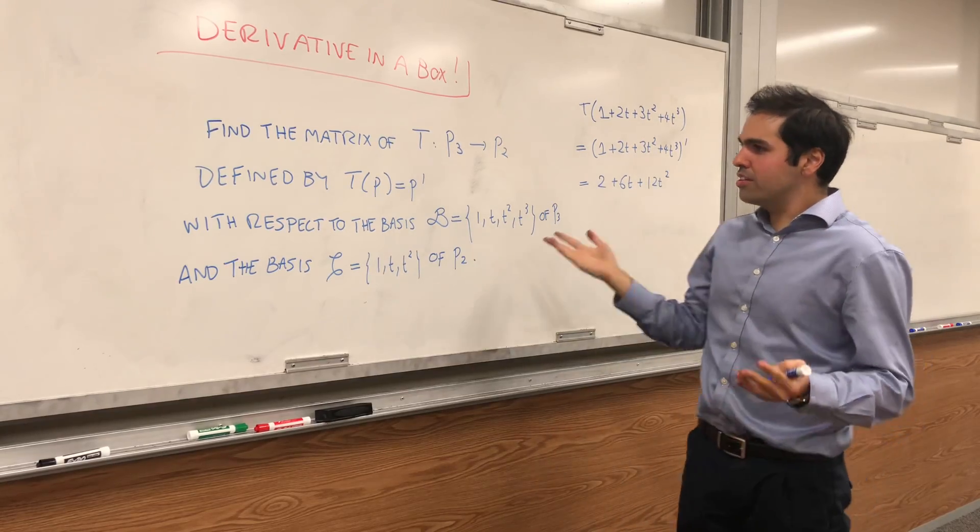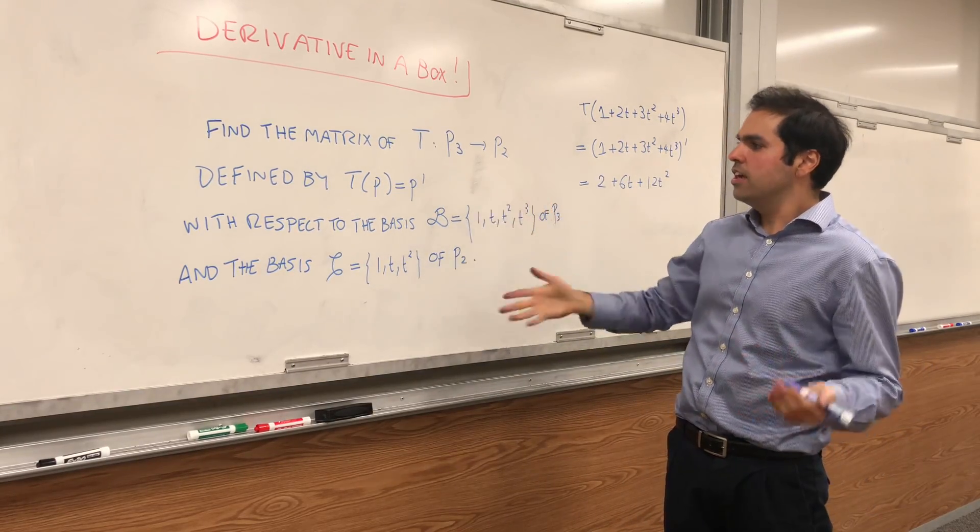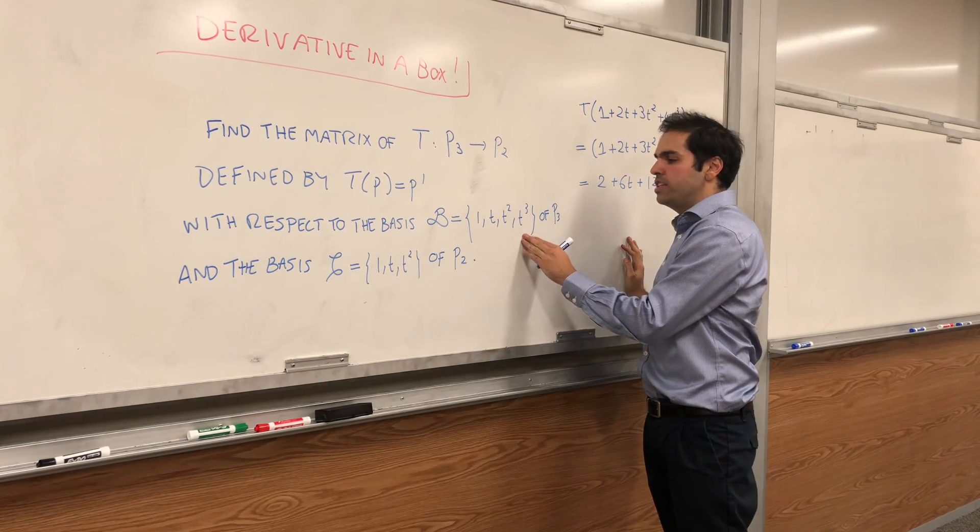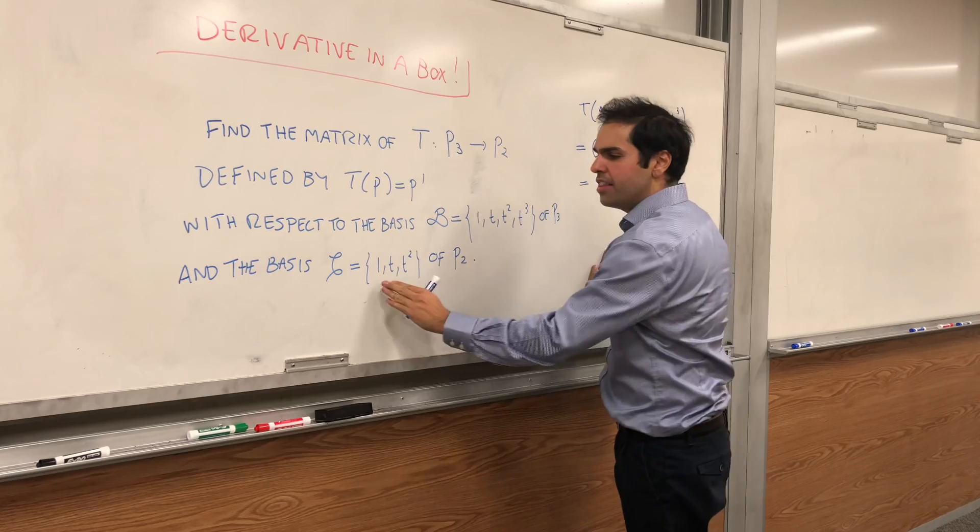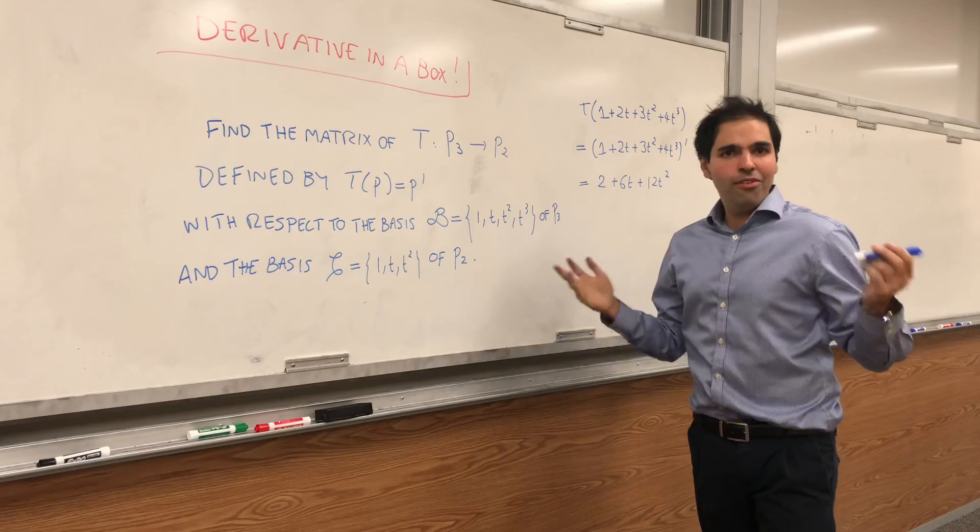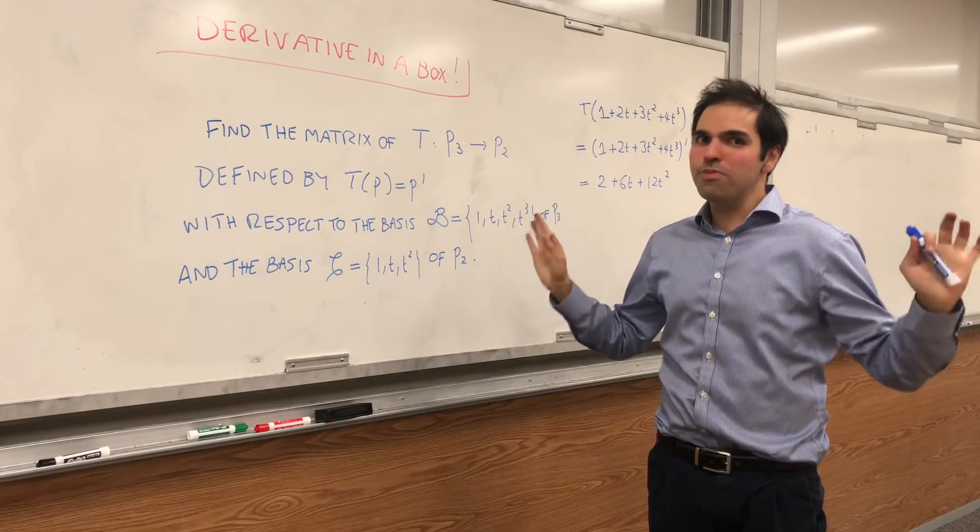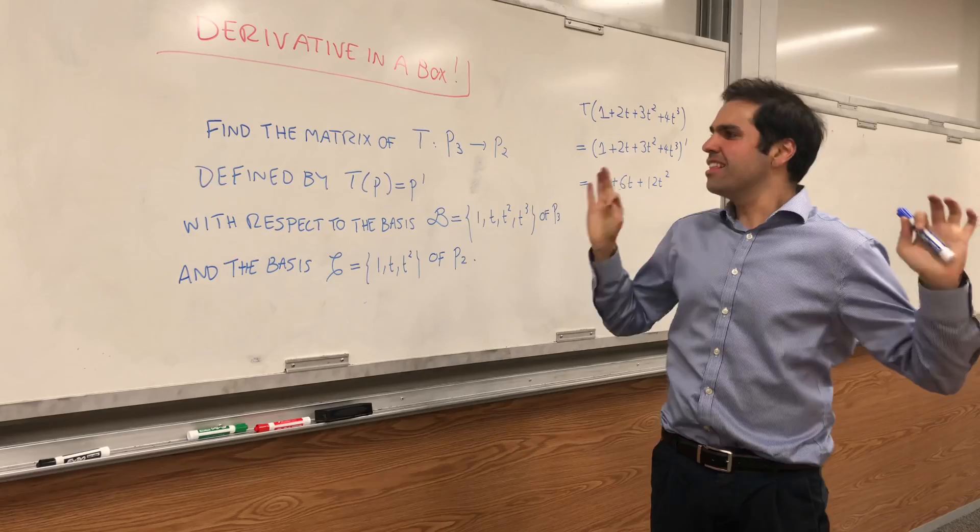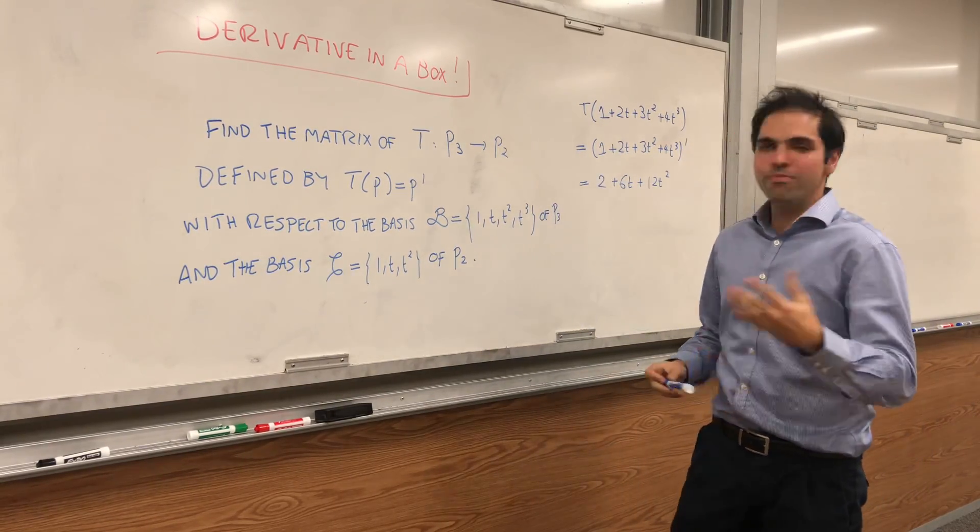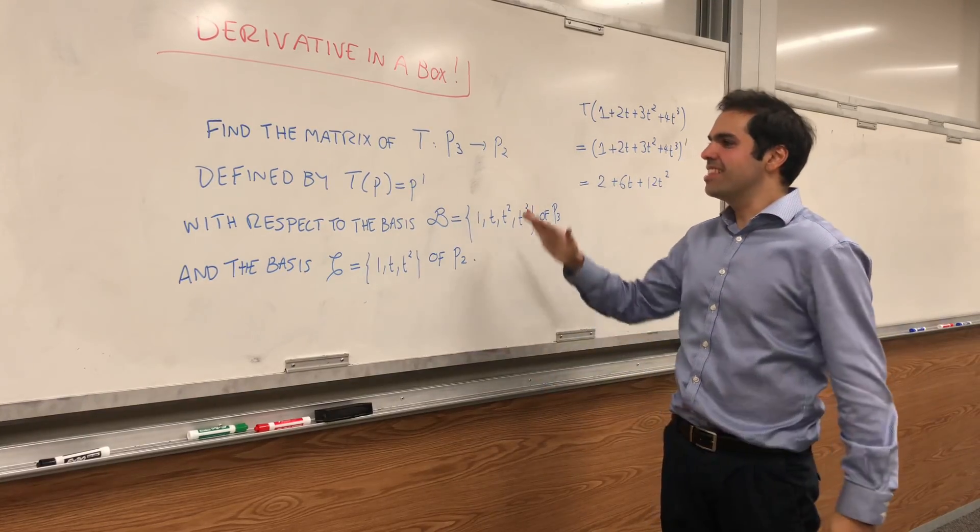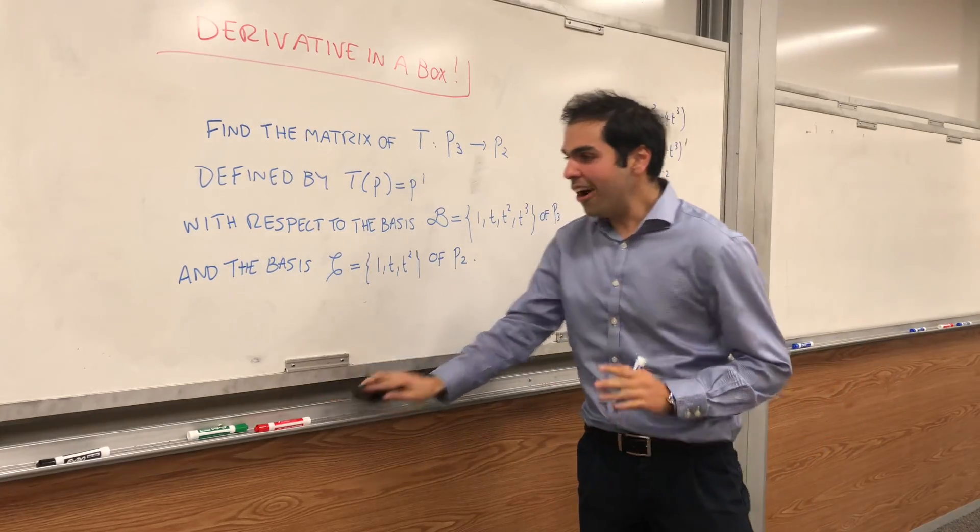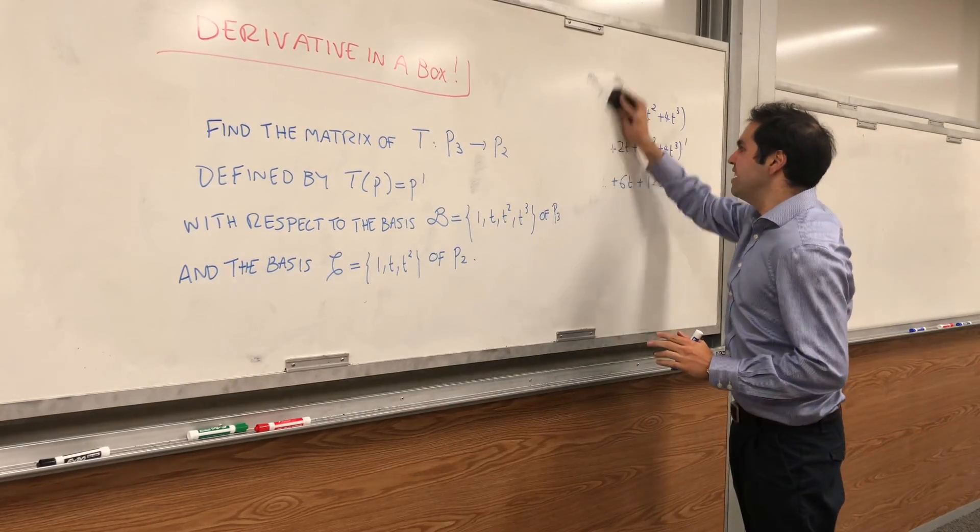And what we would like to do is find the matrix of T with respect to the standard basis 1, t, t squared, t cubed of P3 and the output basis 1, t, t squared of P2. Now, how do you calculate the matrix of a linear transformation?